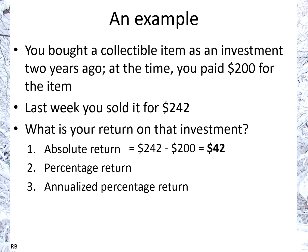The absolute return is just how much you made in dollars — the difference between what you sold it for and what you initially bought it for. So that's $242 minus $200, which is $42. The percentage return would be the absolute return divided by your initial investment: $42 divided by $200, which is 21%.